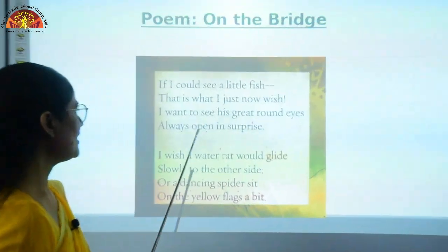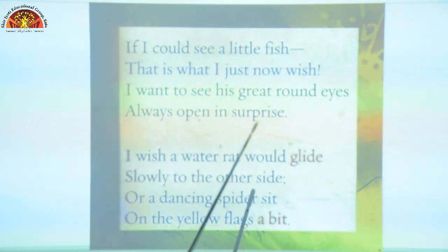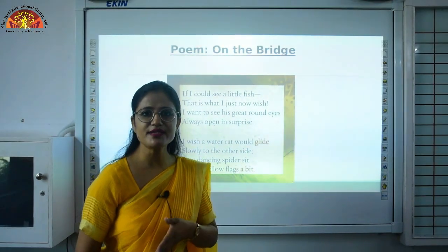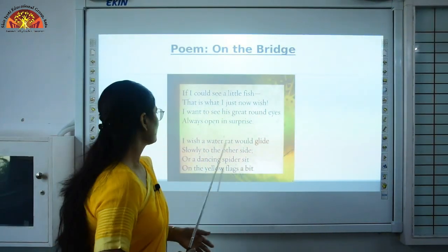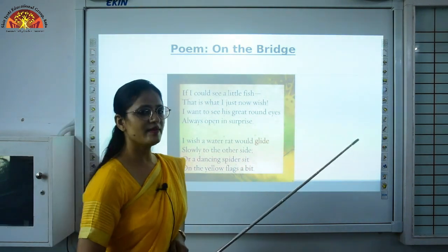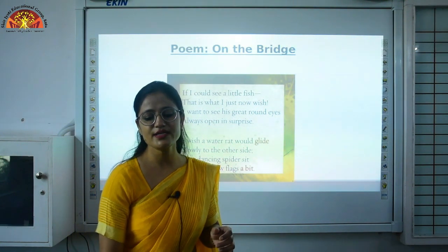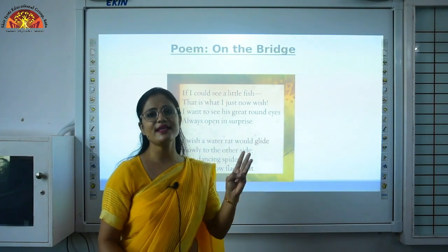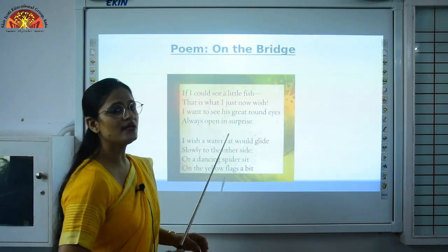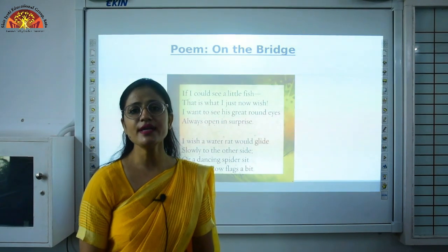Now further: 'I wish a water rat could glide slowly to the other side' — she is wishing to see the water rat glide easily from one side to the other in the water. 'Or a dancing spider sit on the yellow flags a bit' — on the yellow flags means on the grass, and she wants to see the dancing spider there. She wants to see three things: the fish, the water rat, and the spider.